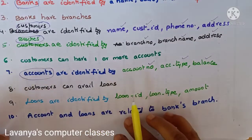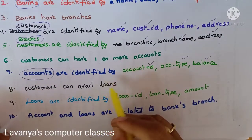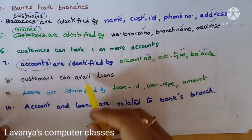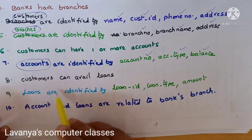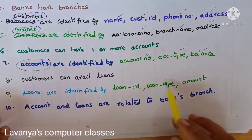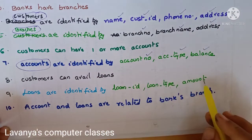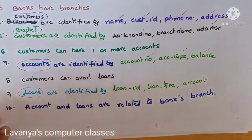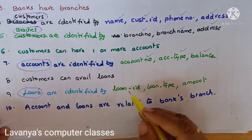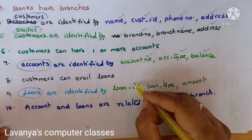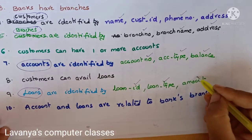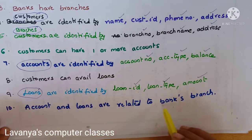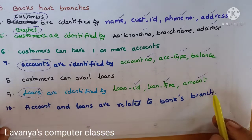Customers can also avail loans. Banks give loans to customers. Loans are identified by loan ID, loan type, and amount. Here is one more entity set — loans — with attributes: loan ID, loan type, and amount. Accounts and loans are related to the bank's branch.